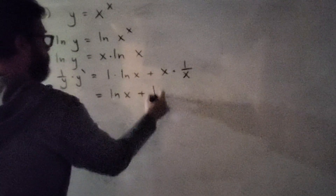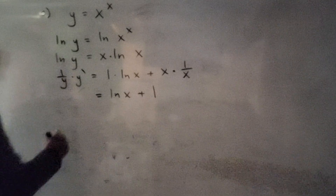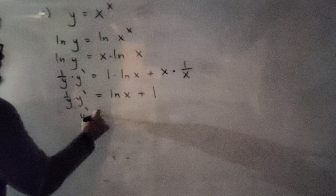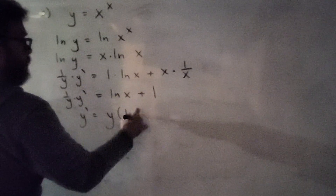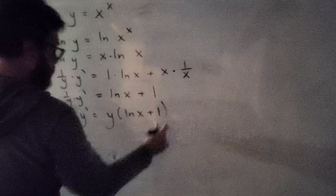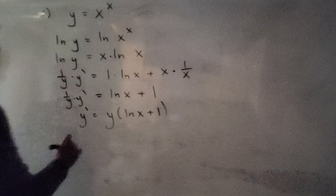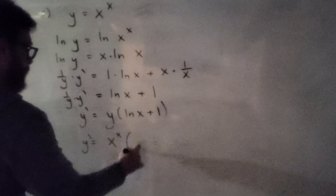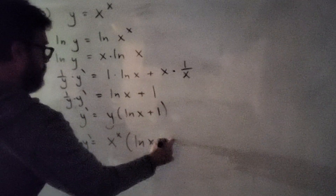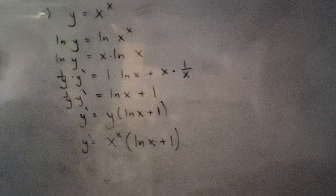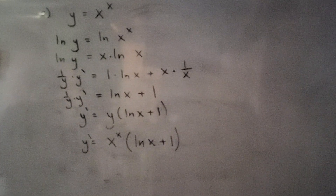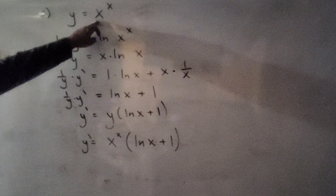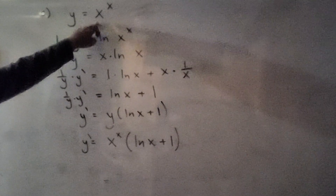Simplifying the right-hand side: natural log of x plus x times 1 over x gives natural log of x plus 1. We have 1 over y times y prime, so y prime equals y times that expression. Since y was x to the x, y prime equals x to the x times the quantity natural log of x plus 1. This is a classic logarithmic differentiation problem — in Calc 1 you need this method.